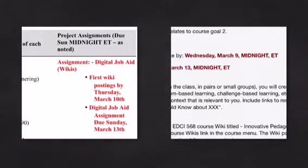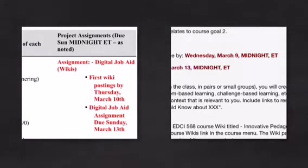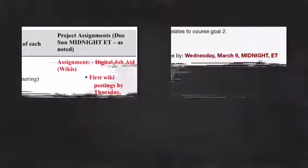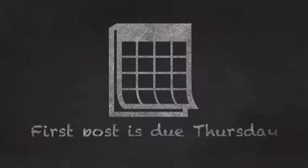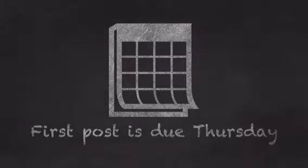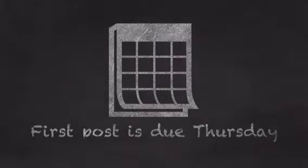There was a discrepancy between our first wiki assignment and the syllabus. The syllabus said we could make our first post by Thursday and the assignment said Wednesday. So let's stick to what the syllabus said — the first post is due on Thursday. If you're able to get in sooner, that would be fantastic.